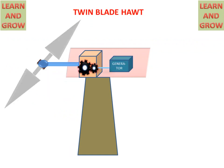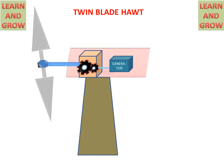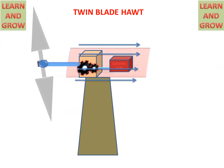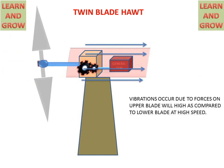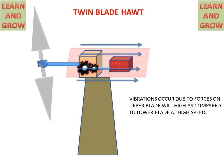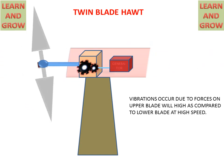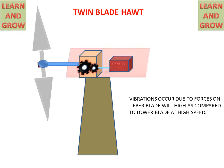Twin blade horizontal axis wind turbine works on the upside direction of the wind. Air comes from the left hand side and strikes on the twin blades. The twin blades start rotating, and by the rotation of the blades, gears in the gearbox start rotating. The gears are attached to the generator shaft, so the generator starts producing electricity. However, vibration can occur because the upper blade experiences higher force at high speed compared to the lower blade.